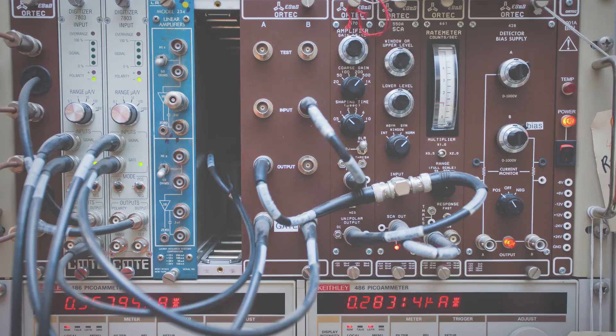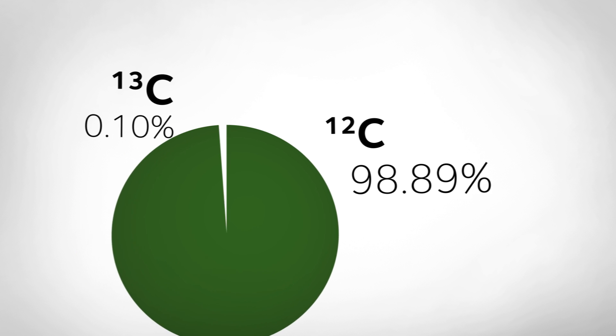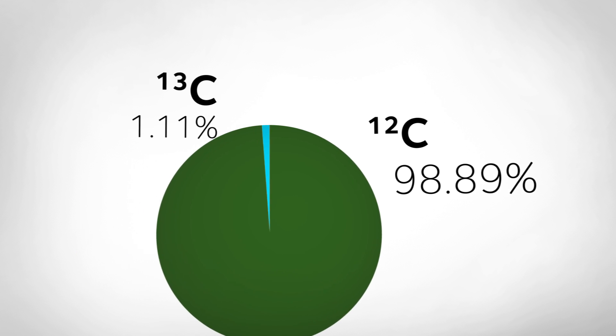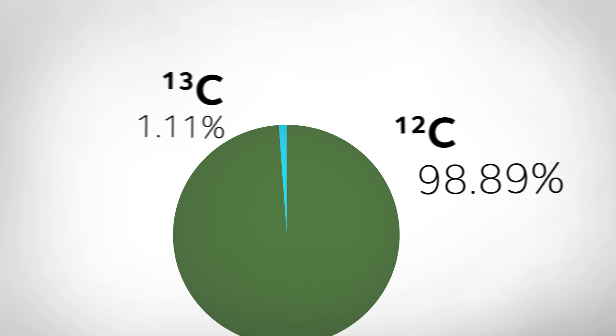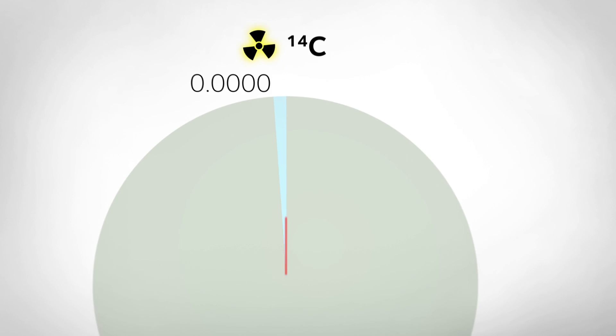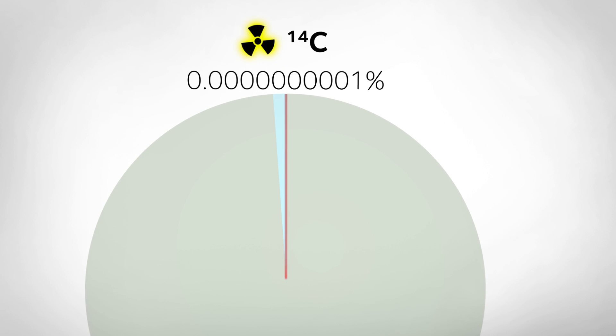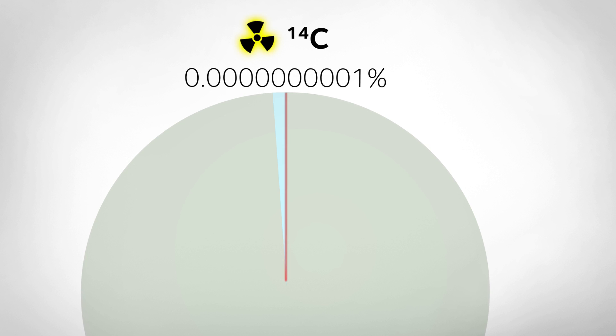Radiocarbon dating is based on the idea that a tiny proportion of the carbon that we find on Earth is radioactive. Every living organism — all animals, plants, etc. — they all take up carbon to build themselves through photosynthesis and through the food chain.